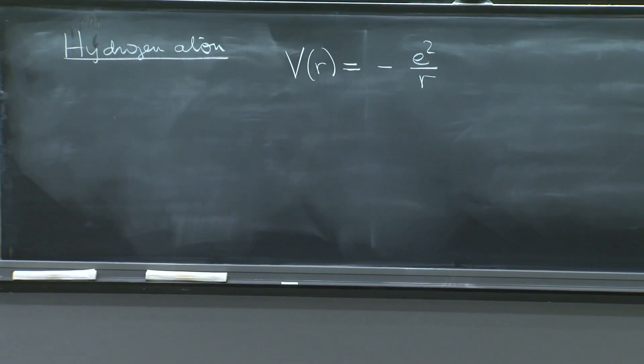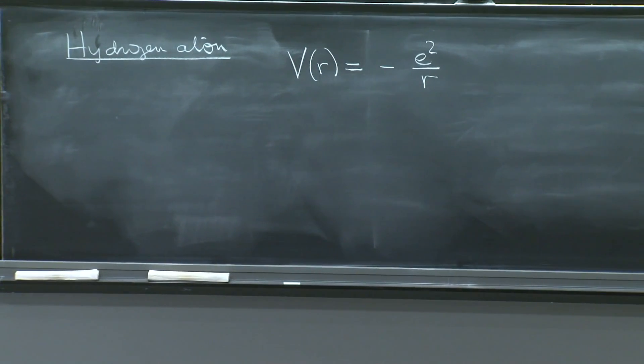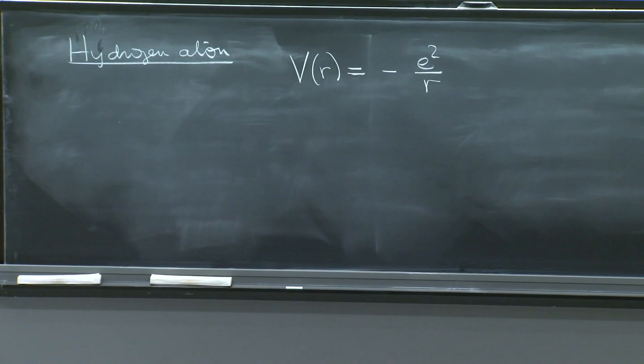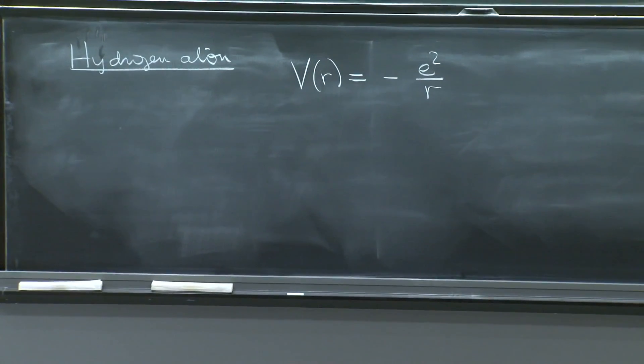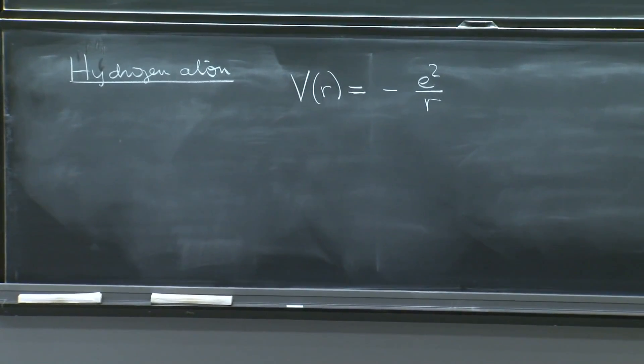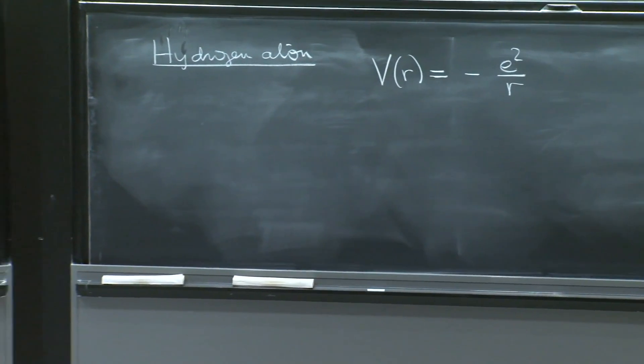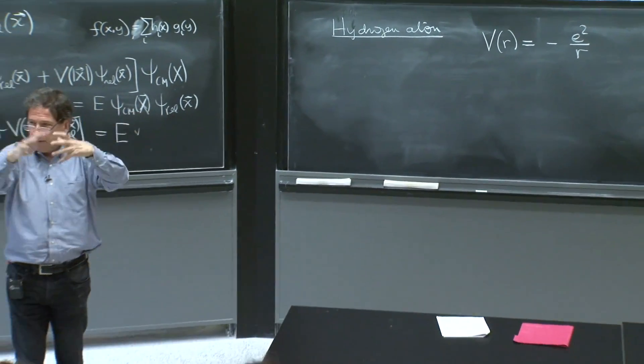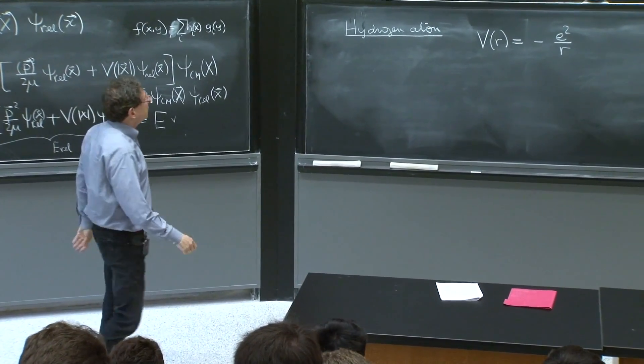e is the charge of the electron, and the electron and proton have the same charge. The potential energy is negative. That sign you should be comfortable with. It suggests the idea that as you go closer and closer, you're going down, and energy favors the two particles to go on top of each other.